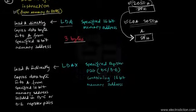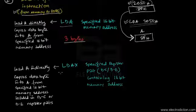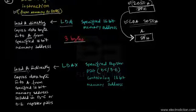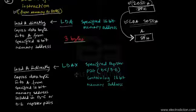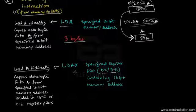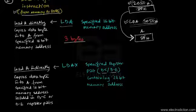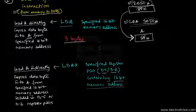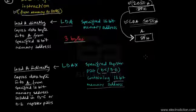Apart from that, we have another instruction in this category — that's LDAX, which stands for load accumulator indirectly. What it does is that you have a memory location, like 2050H, loaded into the BC or the DE register pairs, and this instruction directs the 8085 to transfer or copy a data byte from the corresponding 16-bit memory address loaded in the BC or DE register pairs into the accumulator register.